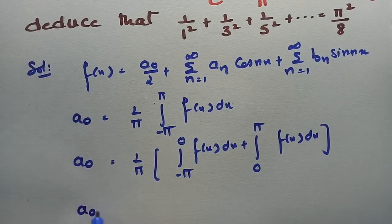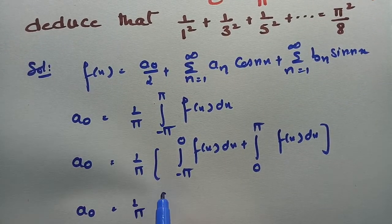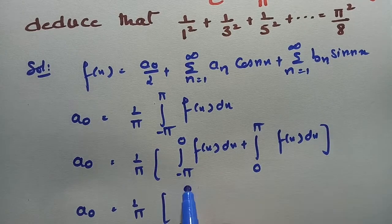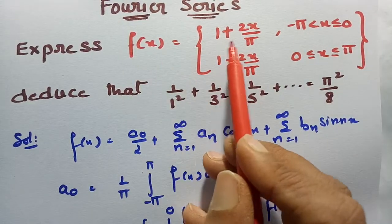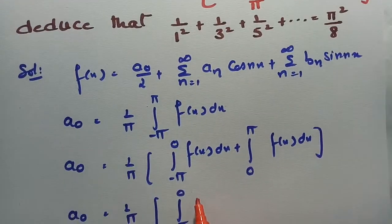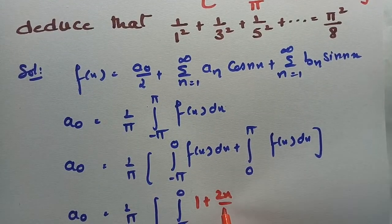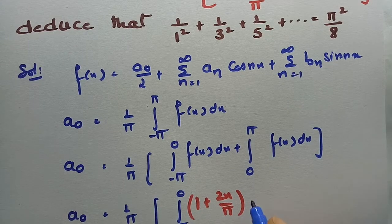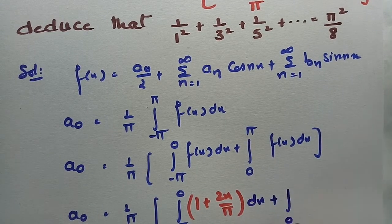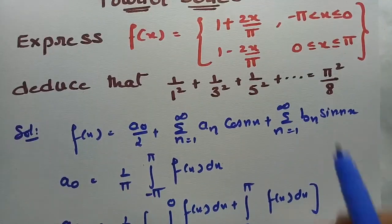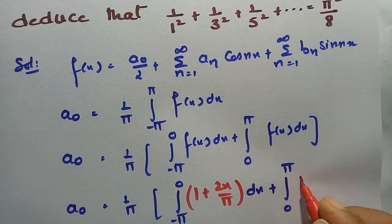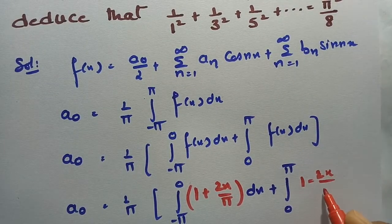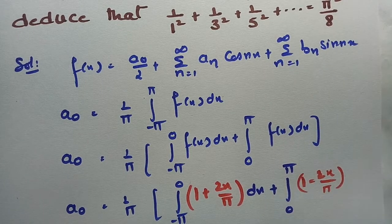So a₀ = (1/π) times the integral from −π to 0, where f(x) = 1 + 2x/π, so this is (1 + 2x/π) dx, plus the integral from 0 to π, where f(x) = 1 − 2x/π, so this is (1 − 2x/π) dx.